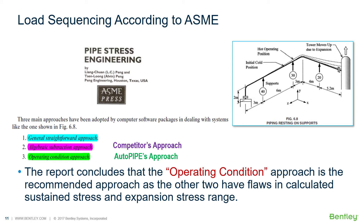The total load approach, or the algebraic subtraction method, doesn't understand boundary conditions and how the bearing force can change with the direction of pipe movement, which can possibly double the stress and load range. It's preferable to perform an incremental analysis, as is done in AutoPipe, to ensure no extreme load is overlooked.